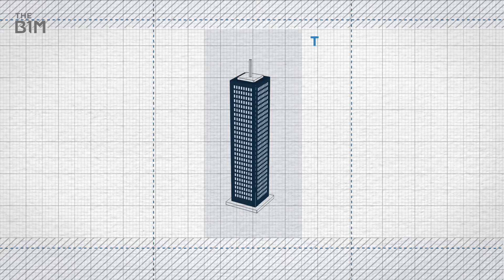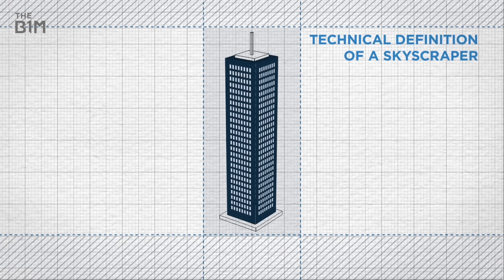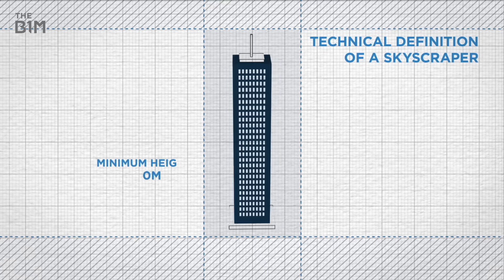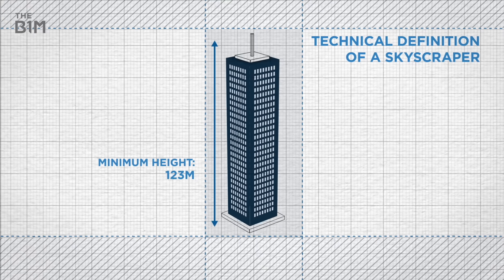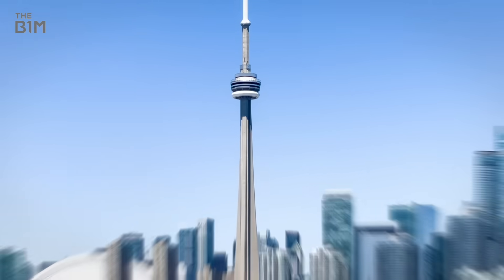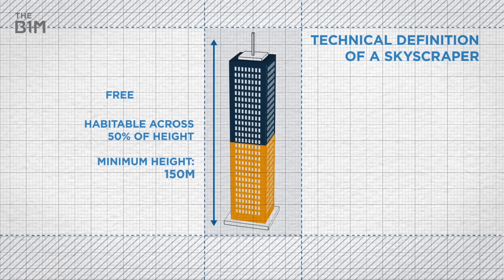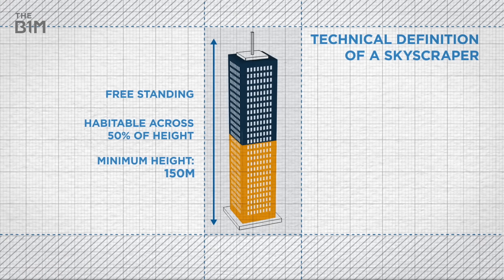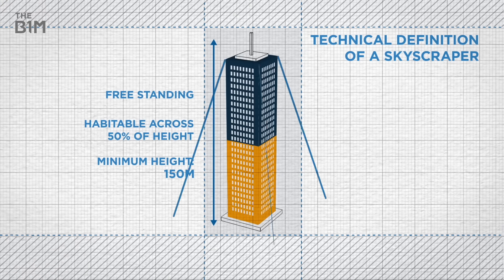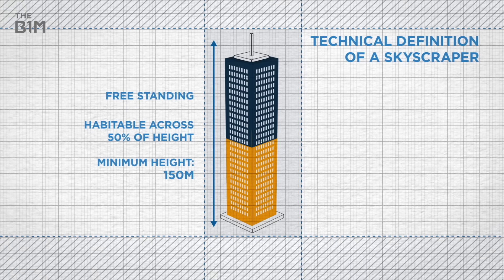One thing to point out here is the technical definition of a skyscraper. The Council on Tall Buildings and Urban Habitat specify that a tower must be more than 150 meters tall – no problem there – habitable across 50% of its height and crucially, freestanding. So any guy ropes or cables could threaten this structure's official status as the world's tallest building.